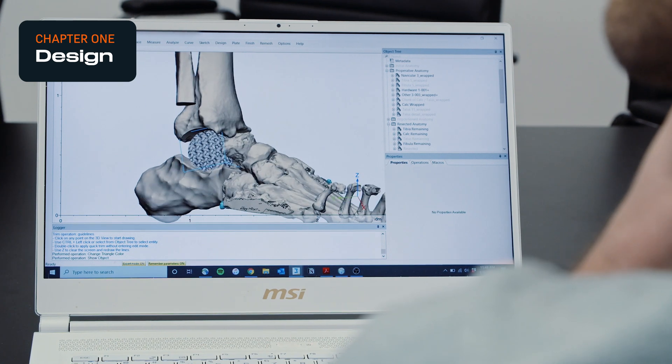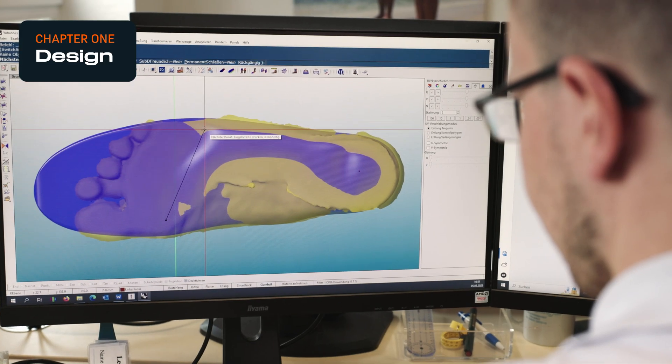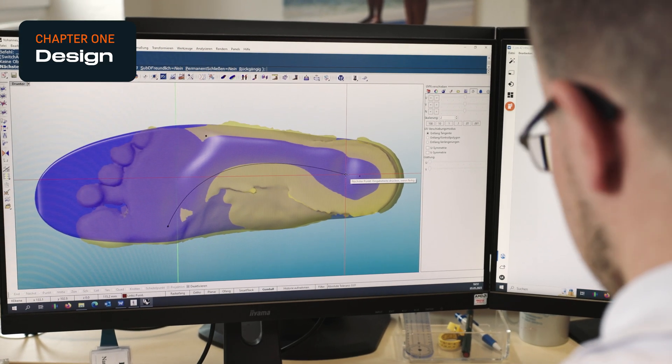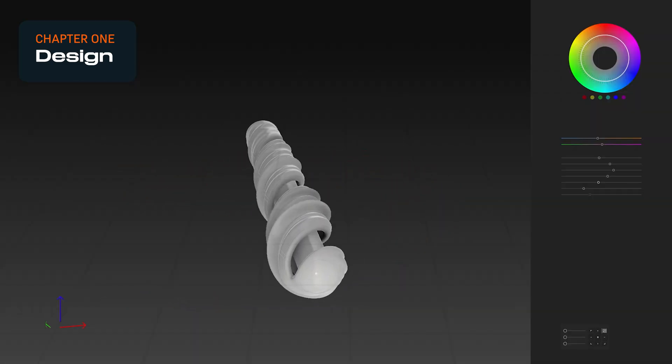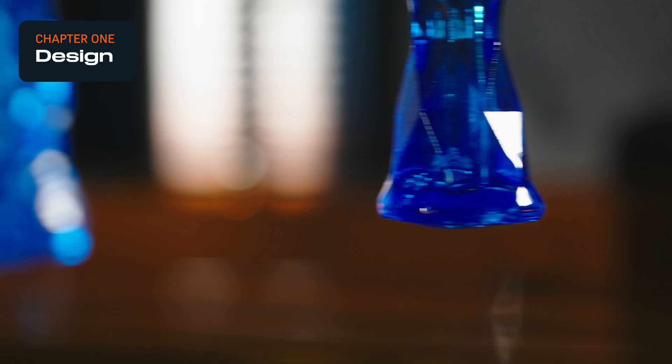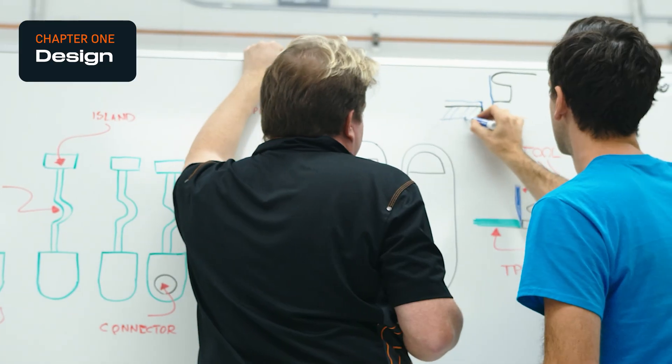3D printers offer almost unlimited design freedom. You can print complex designs with lattices, overhangs, non-line-of-sight geometry, intricate or organic shapes, thin walls, and tiny details. That said, there are still some design constraints.